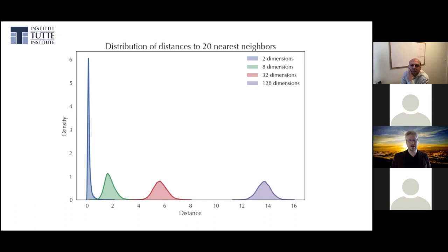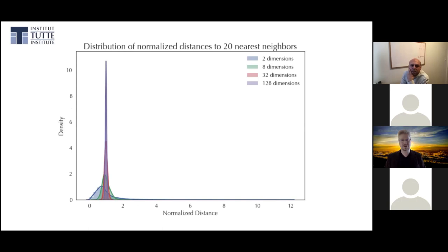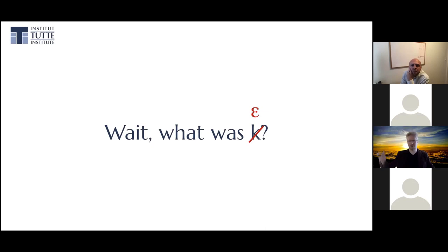If you were to do the Vietoris-Rips complex across high-dimensional data, you end up having nothing connected, nothing connected, and then suddenly a fully connected graph very quickly — which is not what you want. Second big problem: parameter selection. We no longer have to choose the number of clusters K, which is great, but you just replace that parameter with epsilon, the size of your balls. That parameter is in fact less intuitive and harder to select than the number of clusters was.